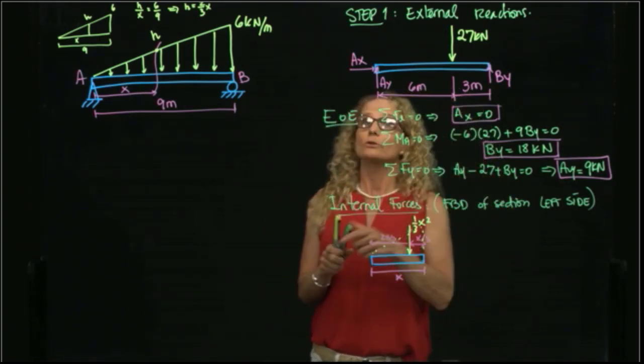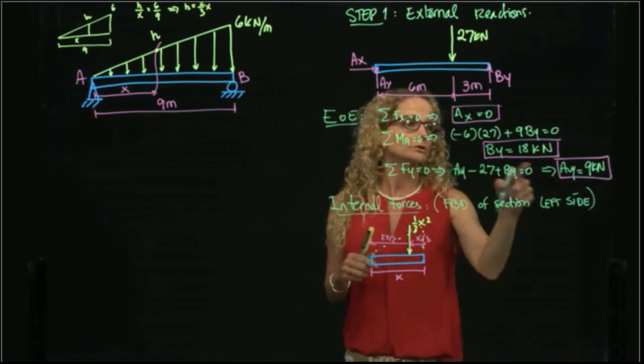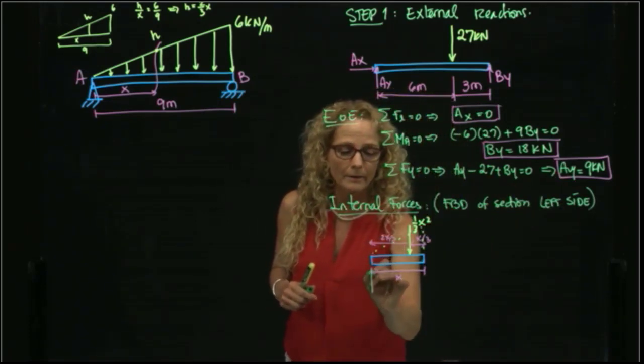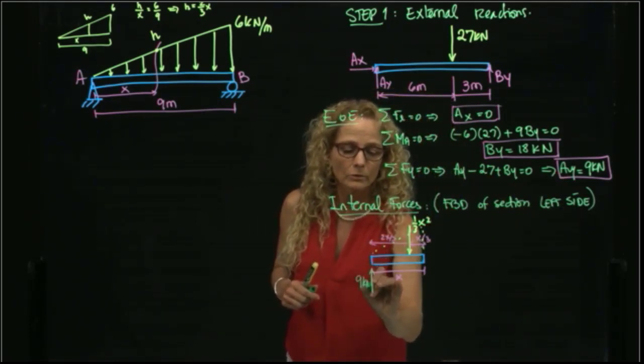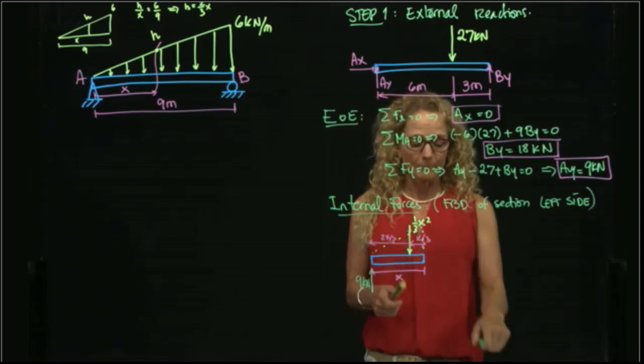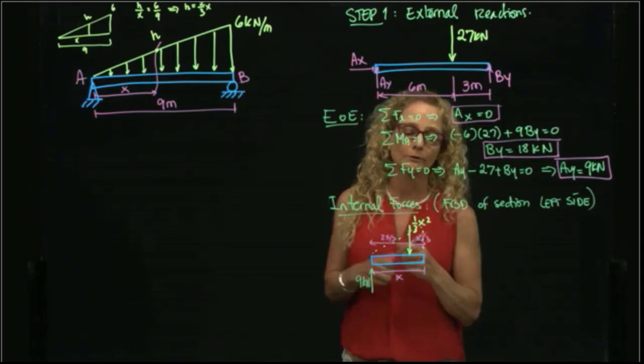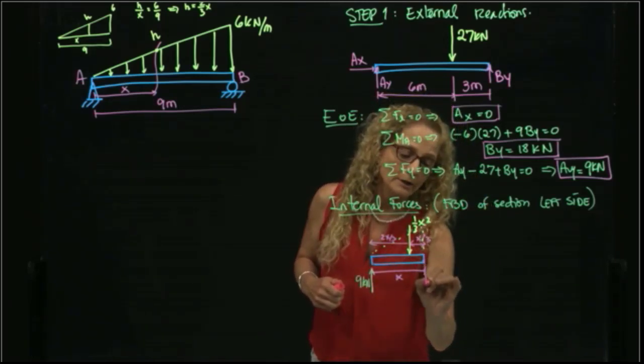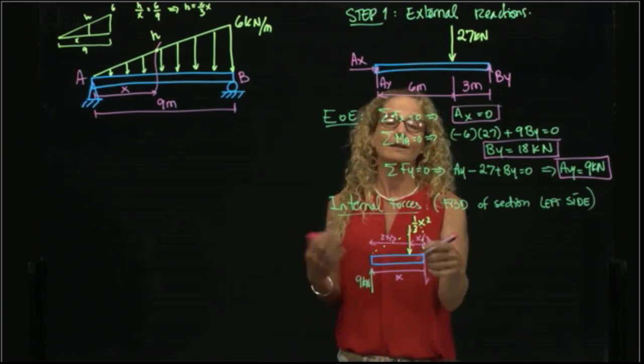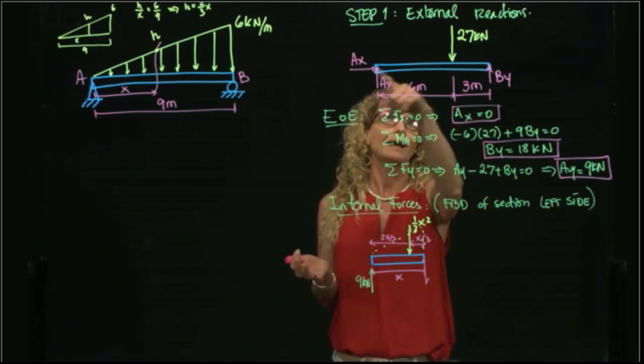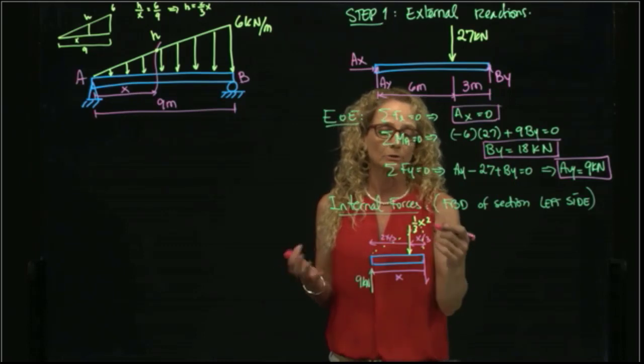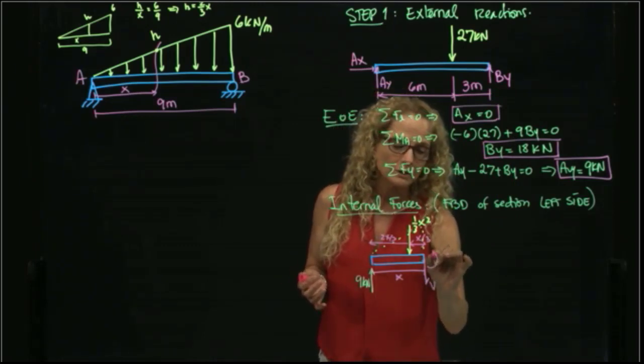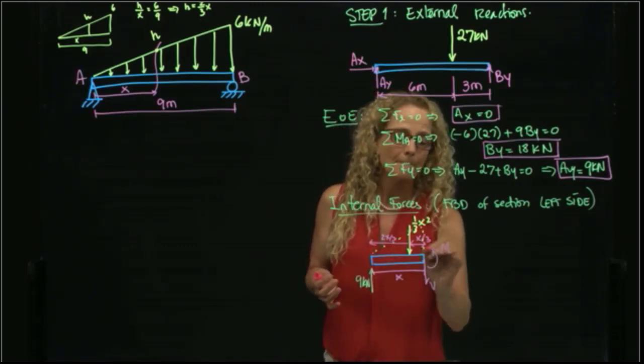I also have my external reactions, which is AY, 9 kilonewtons, and I have my internal forces. I will ignore my force in the axial direction, because we know that nothing is happening in the axial direction of the beam. And I have my shear force and my bending moment.